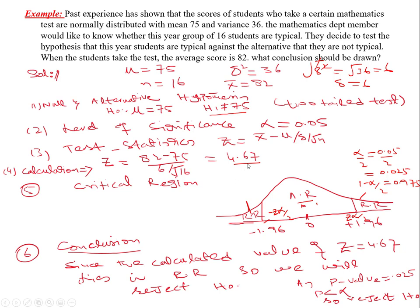Our calculated z value is 4.67. Starting from 0, the critical value is 1.96, so 4.67 lies far in the right rejection region. Therefore, we reject the null hypothesis H0. We accept the alternative hypothesis that mu is not equal to 75, meaning this year's students are not typical.